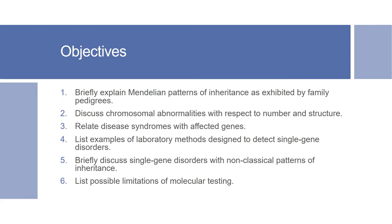The objectives for this lecture are: number one, briefly explain Mendelian patterns of inheritance as exhibited by family pedigrees; number two, discuss chromosomal abnormalities with respect to number and structure; number three, relate disease syndromes with affected genes; number four, list examples of laboratory methods designed to detect single gene disorders; number five, briefly discuss single gene disorders with non-classical patterns of inheritance; and number six, discuss the major limitation of molecular testing.